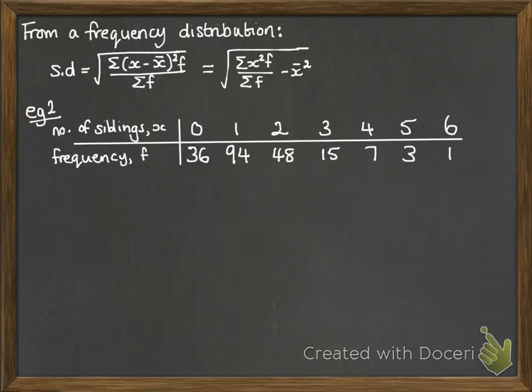So here's our example. Now I've just borrowed this one from the example we did in the last video where we were finding the mean from a table. So this was the number of siblings and how many people said they had that many siblings. So for example, 15 people said they had 3 siblings.